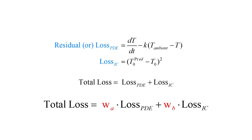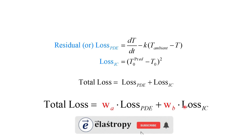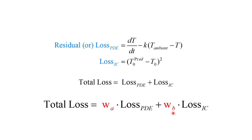Towards the end of this tutorial, we will discuss an important topic in physics-informed neural networks: multi-weighted loss functions. These loss functions allow us to fine-tune network performance by balancing different aspects of the problem. By carefully tuning special weights attached to loss terms — such as loss from the PDE and loss from initial conditions — we can improve the model's accuracy and robustness, making it better suited for dealing with several types of constraints.